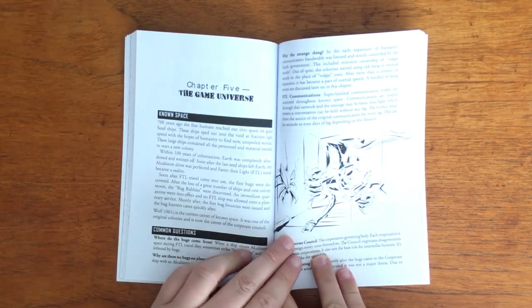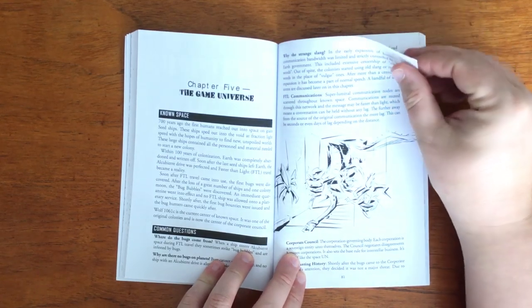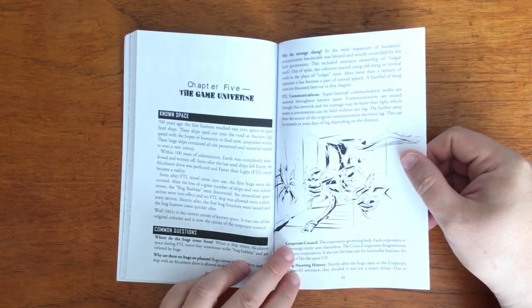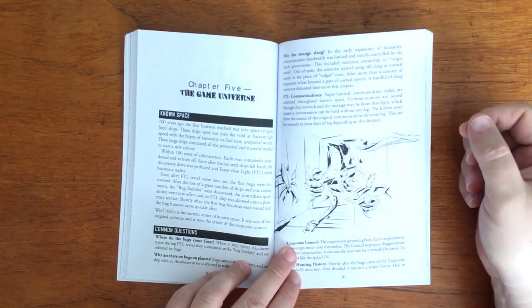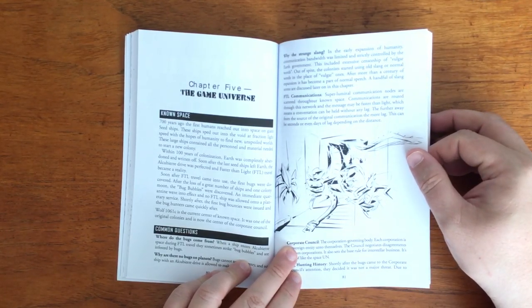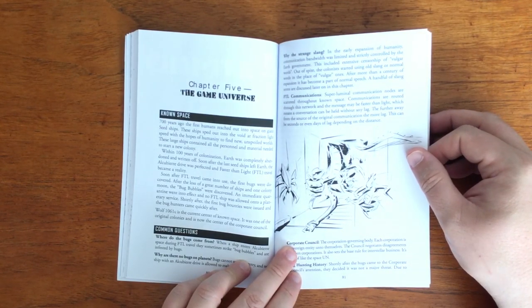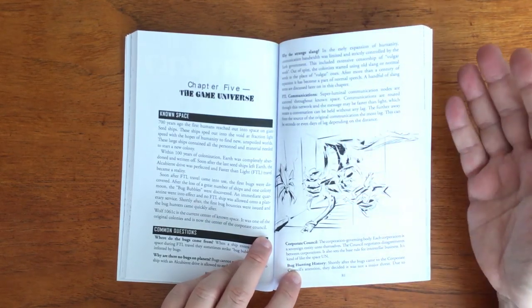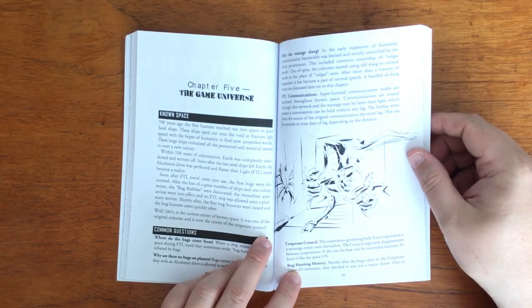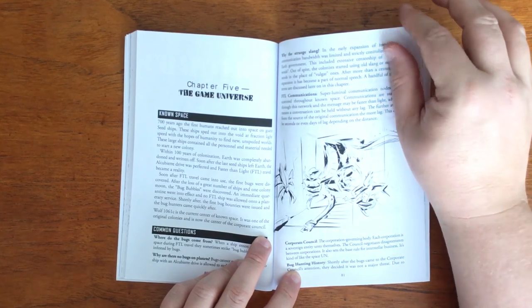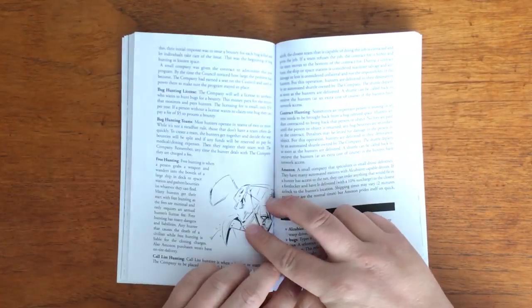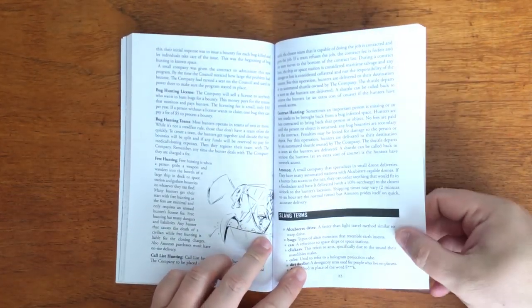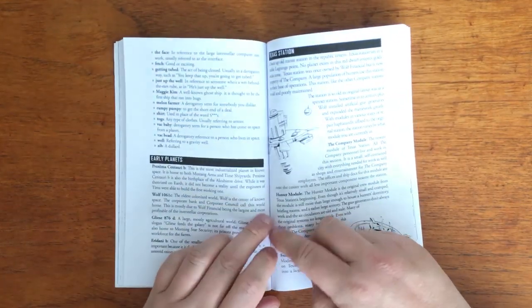It also states that Wolf 1061C is the current known centre of the universe and where the corporate council resides. We have some common questions around how things work such as FTL communications and where bugs come from, and also the strange use of slang where words like duck and shift are used instead of their vulgar similar words. It talks about how contracts work, bug hunting teams and even the drone delivery company Amazon who can get items to you in between two minutes and an hour. It gives us a list of common slang terms currently in use and then gives a brief paragraph on a couple of planets that are populated.